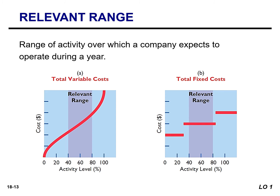For most companies, operating at almost zero or 100% capacity is the exception rather than the rule. Instead, most companies operate over a narrower range, such as 40 to 80% capacity. That 40 to 80% capacity is represented in purple on both the total variable cost and fixed cost diagrams. The range over which a company expects to operate is referred to as the relevant range. Within the relevant range, as both diagrams show, a straight-line relationship generally exists for both variable and fixed costs.